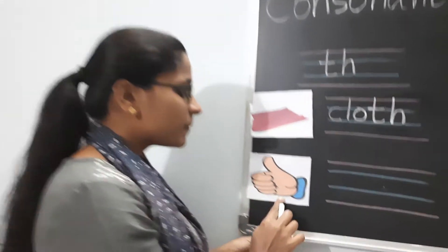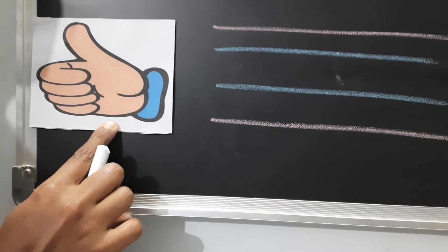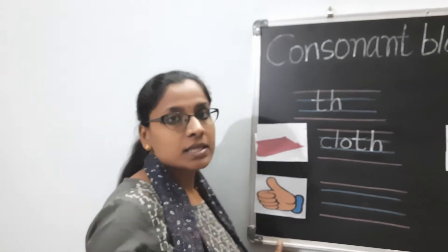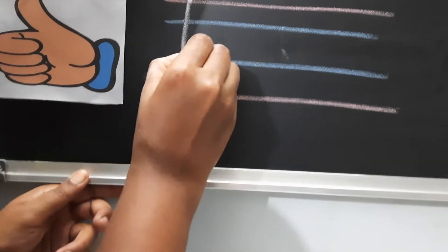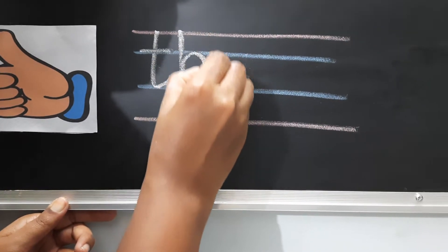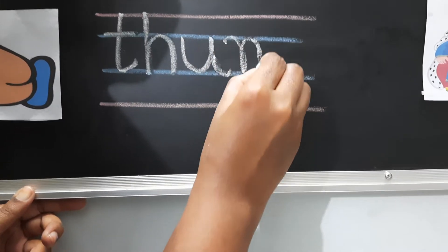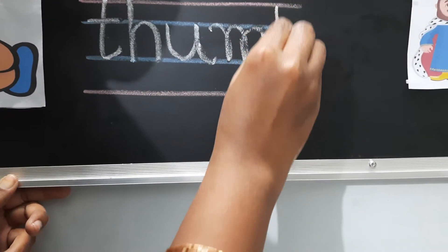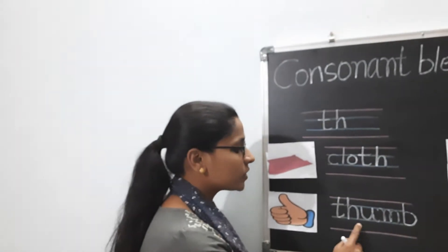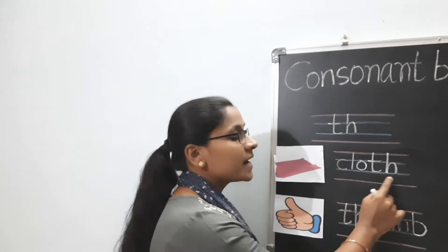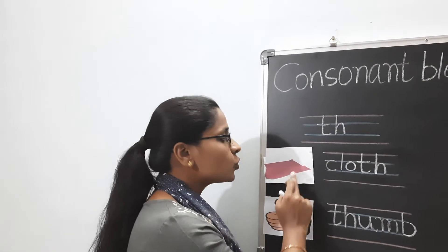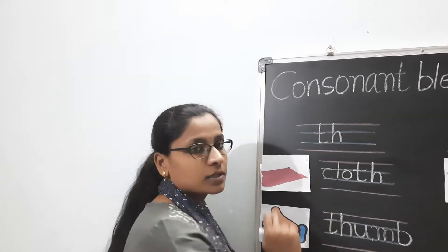So what is the second example we have? What is the second picture we have here? Thumb. When you are saying the word thumb, it is starting with the blend TH. Let's write: T-H-U-M-B. Thumb. Okay children, so cloth is ending with the blend TH, and thumb is starting with the blend TH. These two belong to the TH blend.